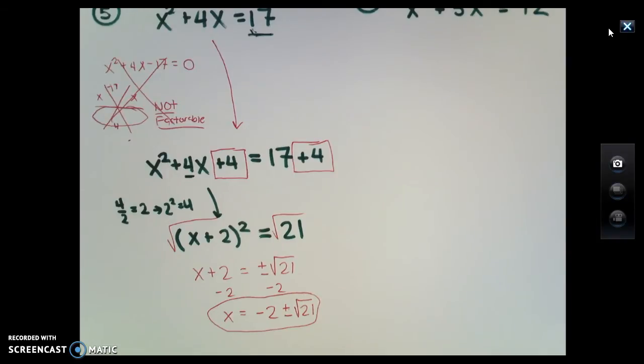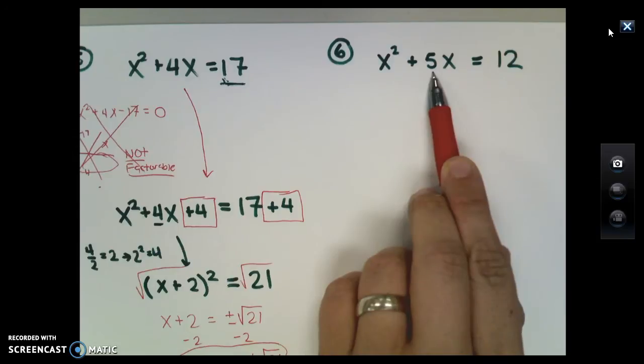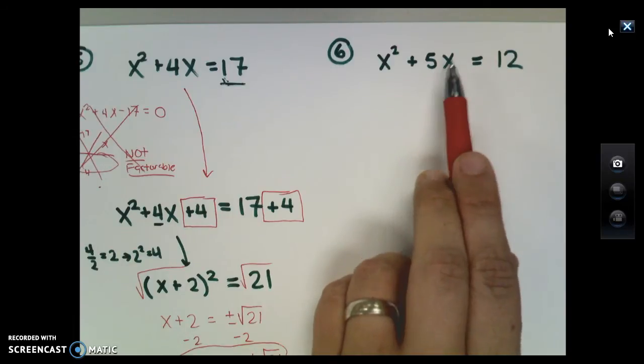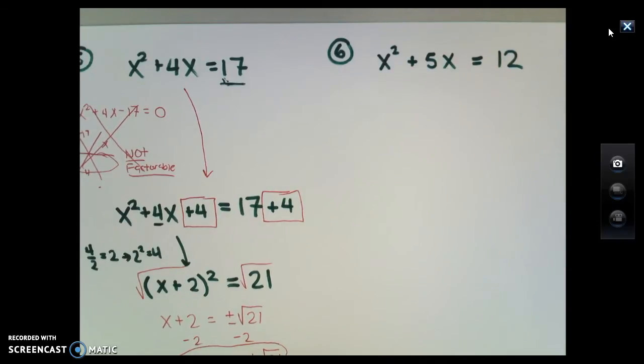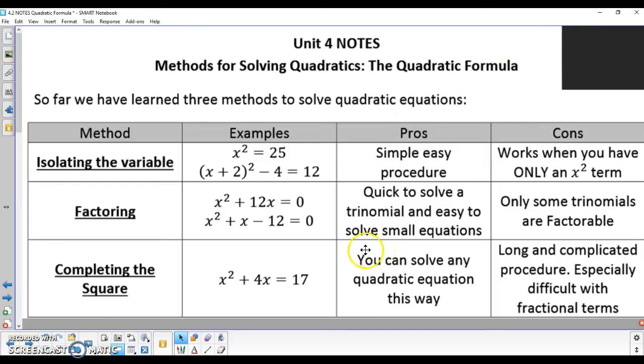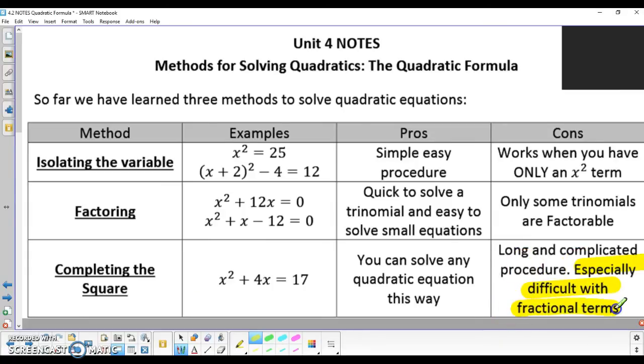Completing the square works for every single type of quadratic. However, if we look at number 6, x squared plus 5x equals 12, if I take half of 5, half of 5 is 2.5, and when I square 2.5, I'm going to end up with a decimal. While completing the square will work for number 6, I'm going to explore a much more difficult problem because I have to use decimals. A pro here is you can solve for any quadratic equation using this method, but at times this can be a long and complicated procedure. It's especially difficult using fractional terms.